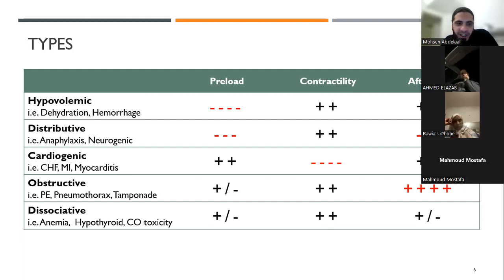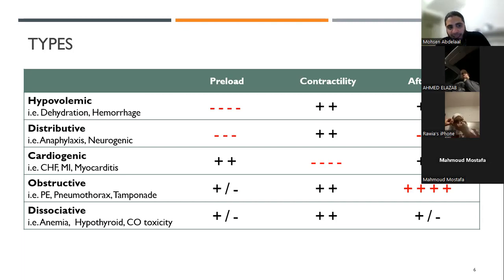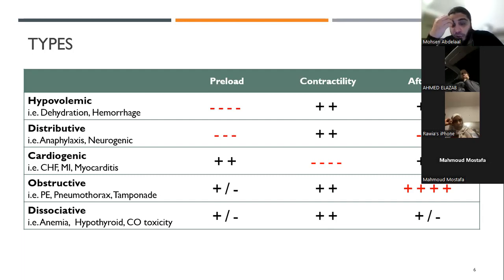In hypovolemic shock, the patient is dry, dehydrated, or bleeding — this affects the preload. Next is distributive shock, which happens with anaphylaxis, allergy, or neurogenic shock. This causes vasodilation — all vessels dilate — affecting both the preload and afterload. Cardiogenic shock is mainly a cardiac problem: congestive heart failure, ischemia, or myocarditis, which impairs contractility.